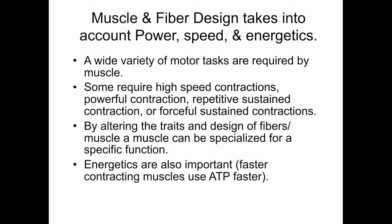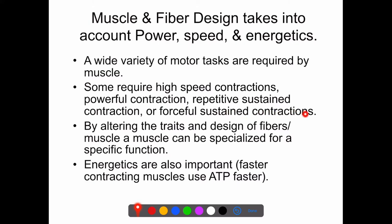When we think about muscle and fiber design, we have to take into account power, speed, and energetics, because a wide variety of motor tasks are required. Sometimes you need high speed, sometimes powerful contractions, sometimes repetitive sustained contractions, or forceful sustained contraction without much shortening. By tweaking the traits and design of fibers or muscle, a muscle can be specialized for a specific function. The energetics are the cost — faster contracting muscles use ATP faster, because every time you move that myosin head and attach it, it requires an ATP.